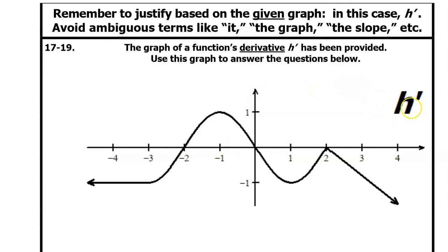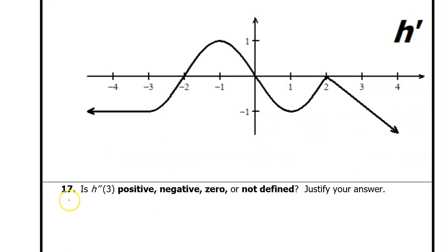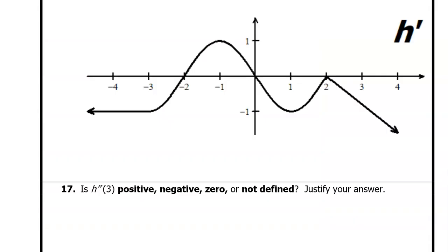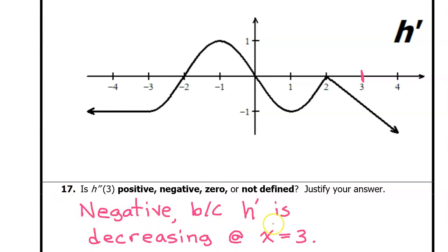For the next few problems, we are given the graph of h prime. So our justifications will only mention h prime. Number 17: is h double prime at 3 positive, negative, zero, or not defined? If h prime is increasing, then h double prime will be positive; if h prime is decreasing, h double prime will be negative. At x equals 3, h prime is decreasing. That means h double prime will be negative. The answer and justification: negative, because h prime is decreasing at x equals 3.